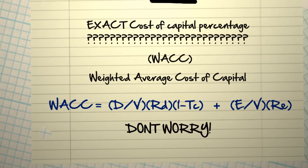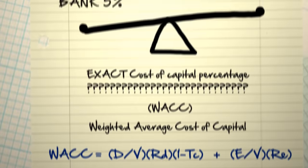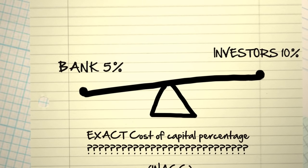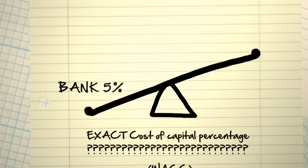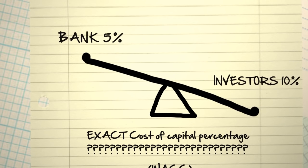Don't worry, it's much easier than it looks. It's called a Weighted Average because it gives more weight or importance to either your borrowed capital or your investors' money, whichever is greater.